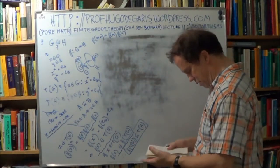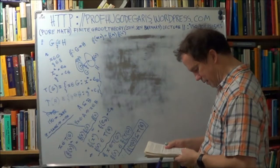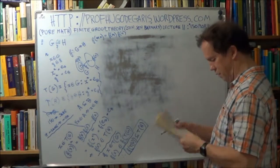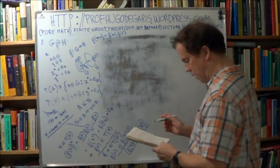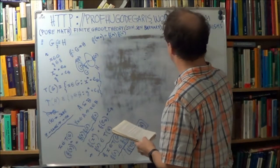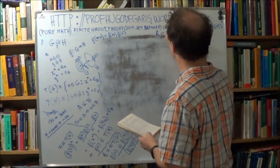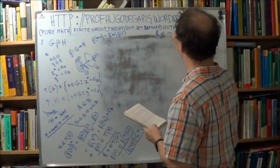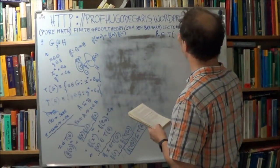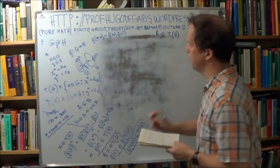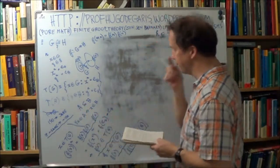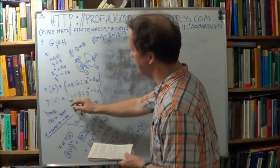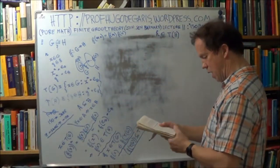So let's now do the second part. We assume now that H is a member of this set — so H is now a member of T(H). We just take an element that belongs to this set.